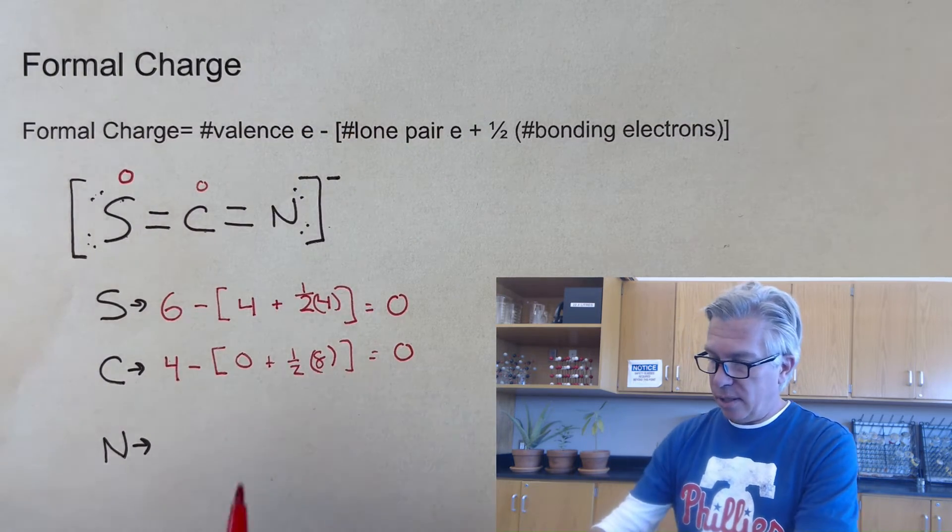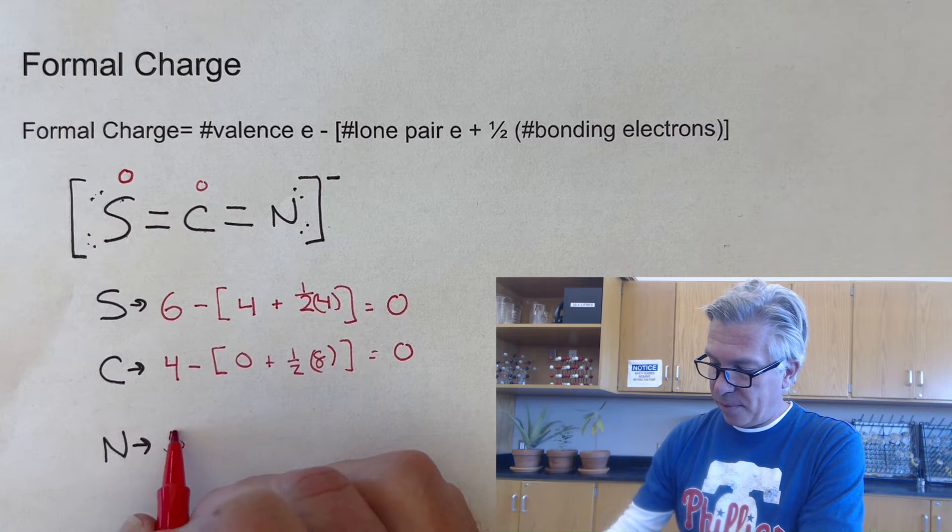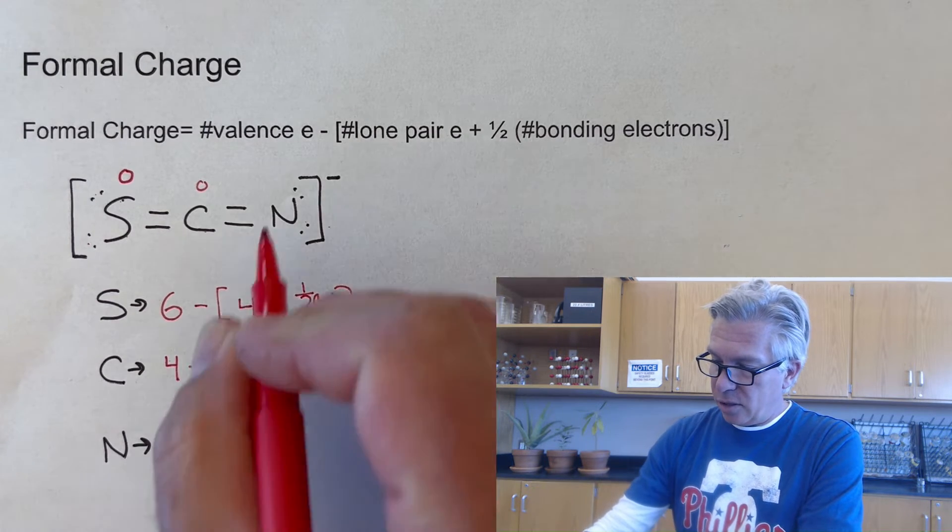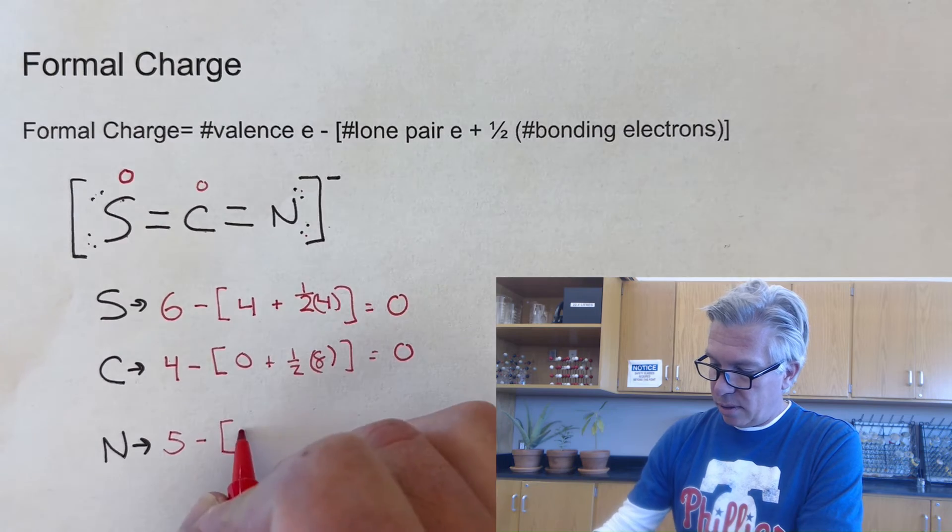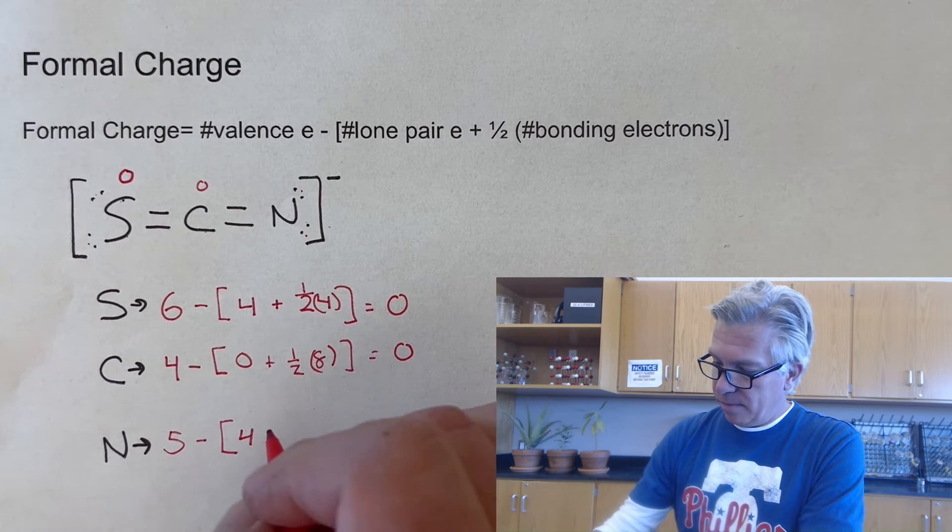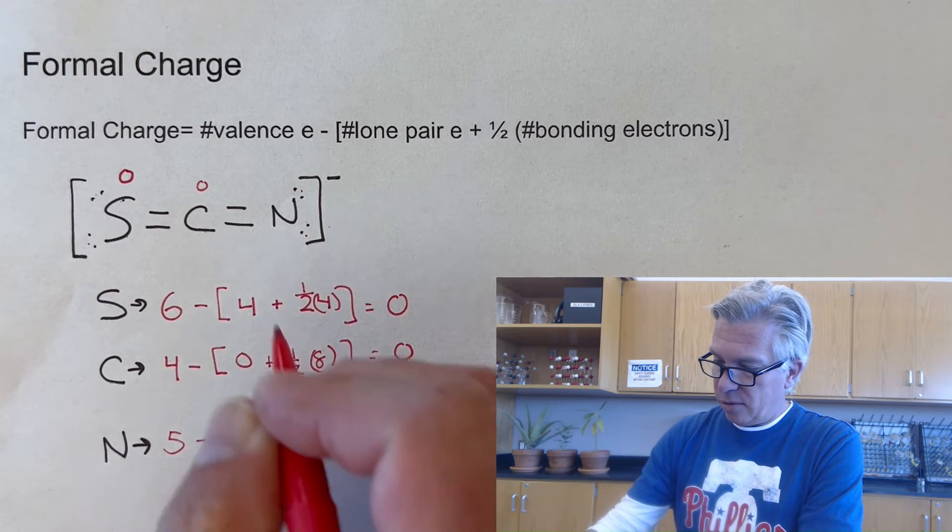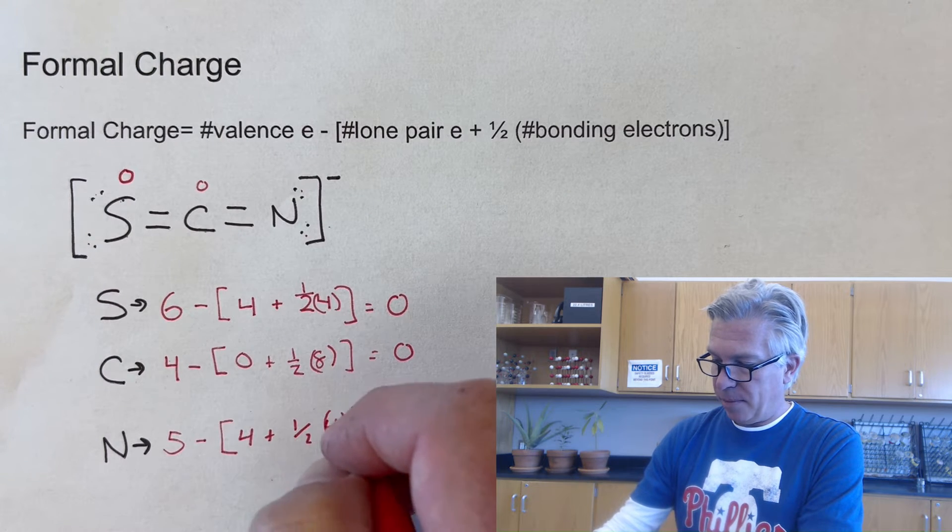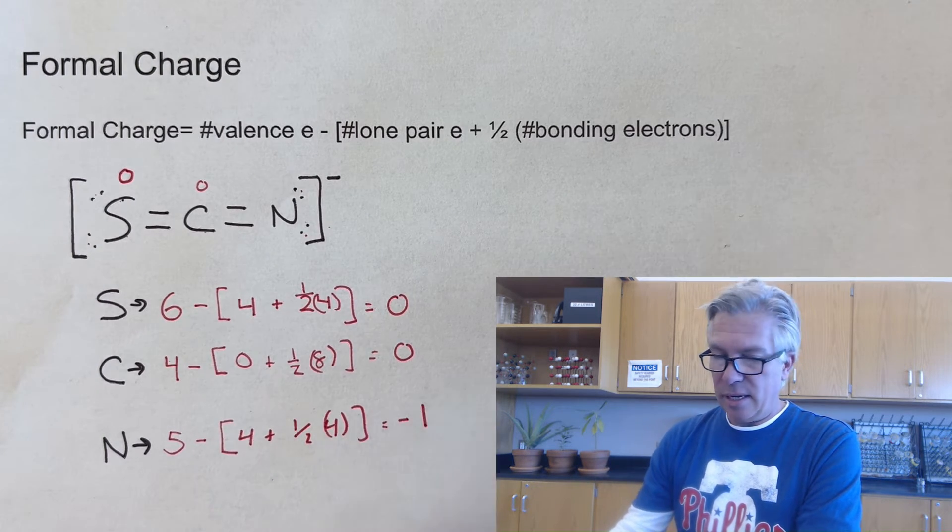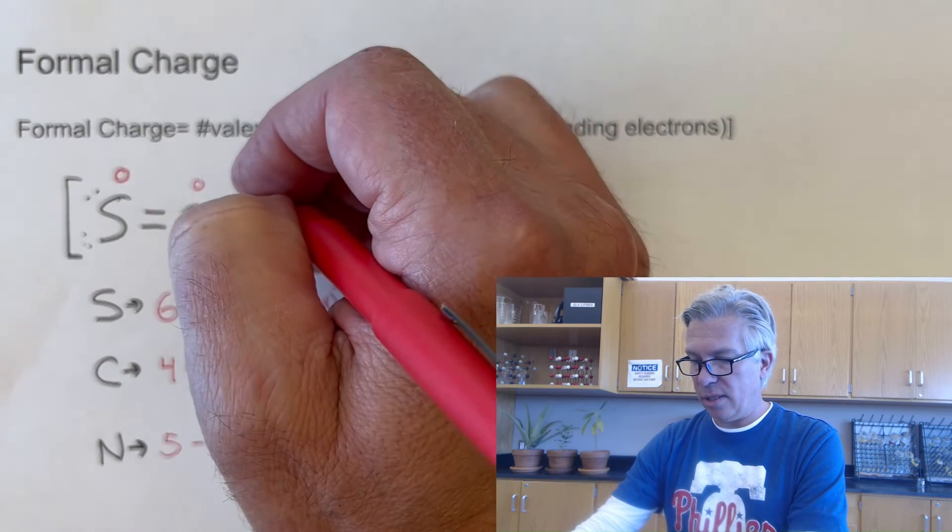And finally, let's do the nitrogen. Nitrogen starts with five. And this nitrogen has two, four lone pair electrons and also two bonds for a total of four electrons. So one half of four. And that gets to be a negative one. So this nitrogen is a negative one.